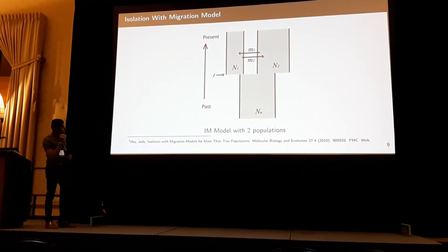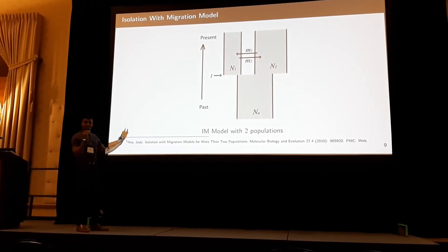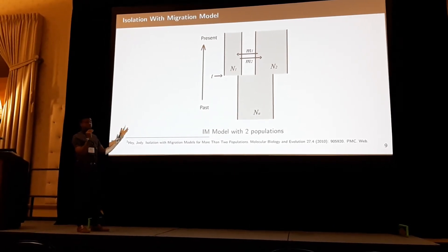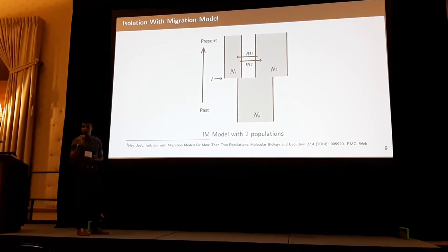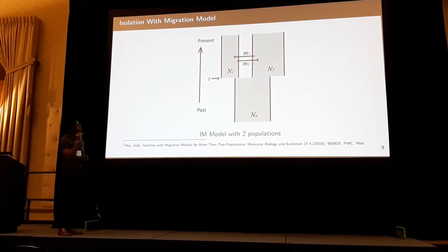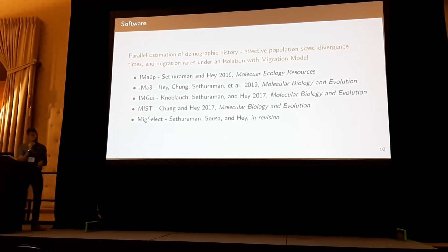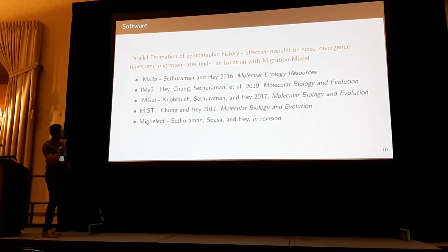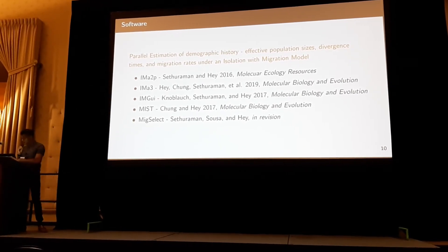The IM model has been around for a while. It's a relatively simple model of allopatric speciation, where you have an ancestral population that splits into two populations with some degree of gene flow between them. Under this model, we've developed a series of software that can estimate effective population sizes, population-scaled mutation rates, divergence times, and migration rates. There's IMA2P, which I developed as part of my postdoc, and more recently IMA3, which does some cool estimation, as well as a bunch of other tools developed in collaboration with my postdoc advisor Jody Hey.